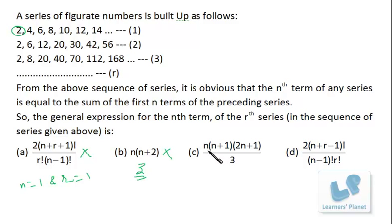Similarly if I put n is equal to 1 over here. So it's 1 into 2 into 2 plus 1, 3 by 3. So here I am getting 2 but this expression is not dependent on r. So it cannot be right choice because we are talking about rth series. And this expression is dependent on n only.